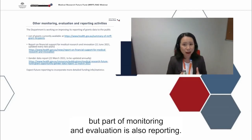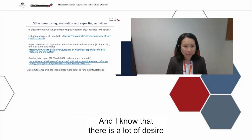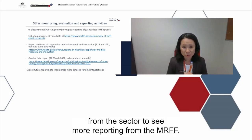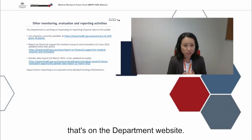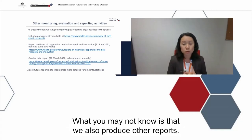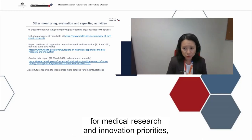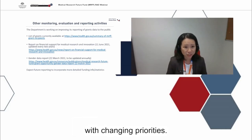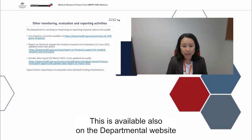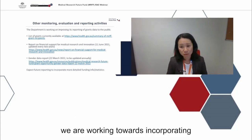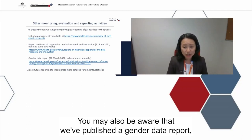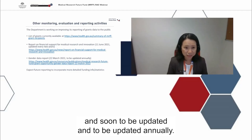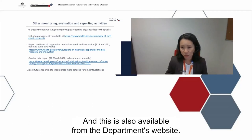Part of monitoring and evaluation is also reporting, and there is a lot of desire from the sector to see more reporting from the MRFF. The department is working on improving its reporting of grants data to the public. We already currently publish a list of awarded grantees on the departmental website. We also produce a report on financial support for medical research and innovation priorities, updated every two years in accordance with changing priorities. We are working towards incorporating more detailed funding information and statistics into our reporting more generally. We've also published a gender data report, first published in March last year and to be updated annually.